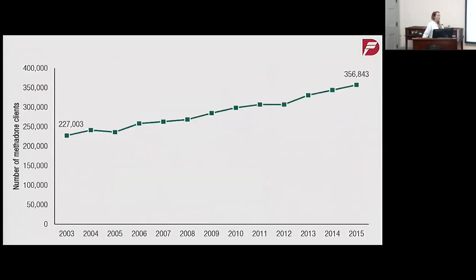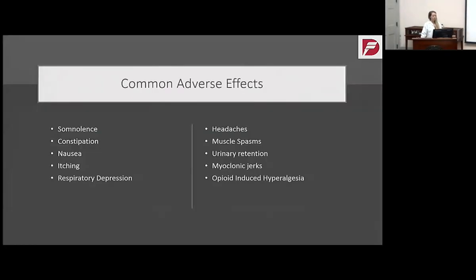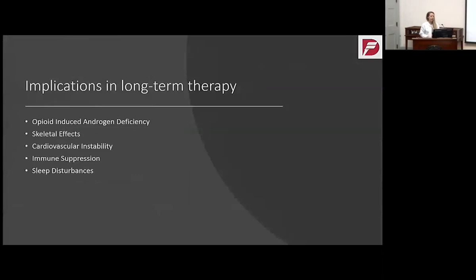The opiate epidemic is on the rise, but fortunately there's more treatment — more patients being put into addiction treatment. The two opiates we have, methadone and buprenorphine, are both being steadily administered, and the number of patients on these is also on the rise. Listed here are the common adverse effects we typically think of in practice, but we're really going to dive into the adverse events that are not as common: opiate-induced androgen deficiency, impact on the skeletal system, cardiovascular instability, immune suppression, and briefly, sleep disturbances.